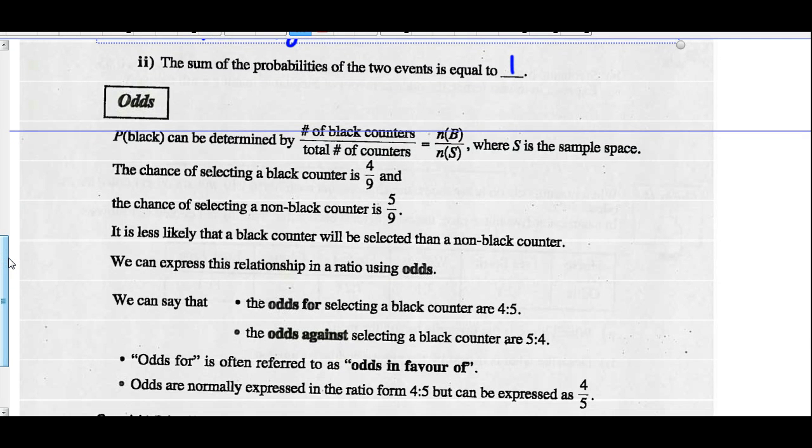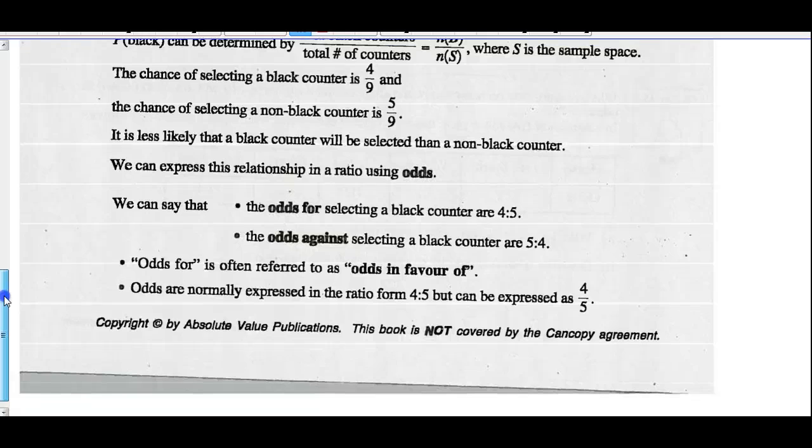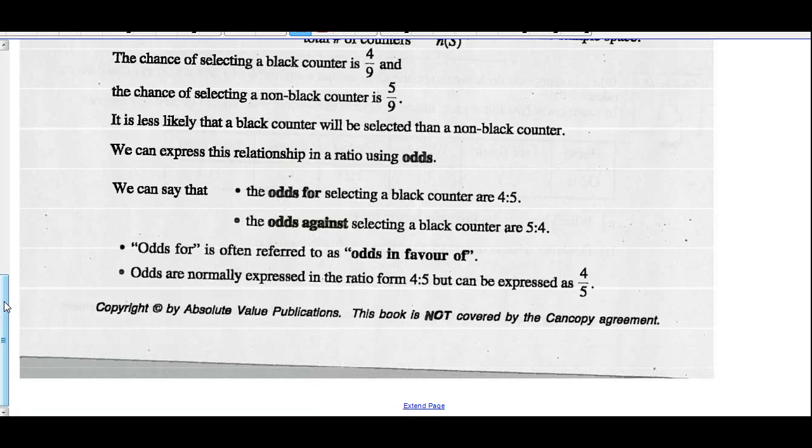Probability of black can be determined by the total number of black counters divided by the total number of counters where S is the sample space. The chance of selecting a black counter is four ninths. The chance of a non-black is five ninths. It is less likely that a black counter will be selected than a non-black counter.